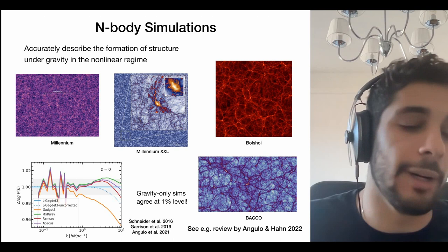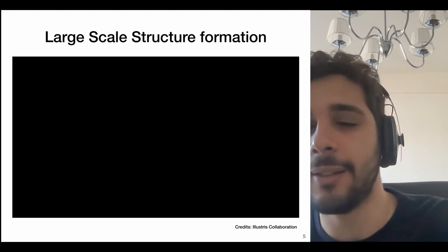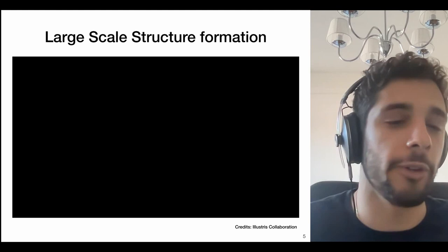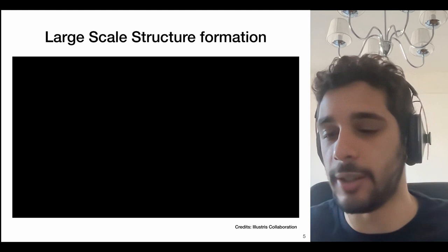In our Lambda CDM paradigm, most of the matter is dark matter, but there is still an observable baryonic component — galaxies and gas. Even though this baryonic component is subdominant in terms of mass, it can change the matter distribution in the cosmos.